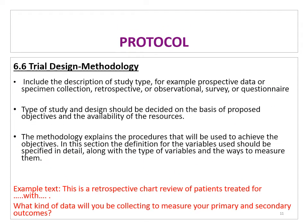The trial design and methodology section includes a description of the study type — for example, prospective data or specimen collection, retrospective, observational, survey, or questionnaire. The study type and design should be decided based on the proposed objective and available resources. The methodology explains the procedures used to achieve the objective. The definition of the variables used should be specified in detail, along with the type of variable and how to measure them. For example: this is a retrospective chart review of patients treated for bronchitis — and you specify what kind of data you will collect to measure your primary and secondary outcomes.